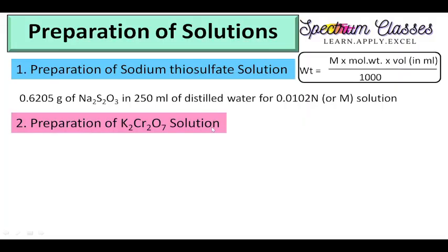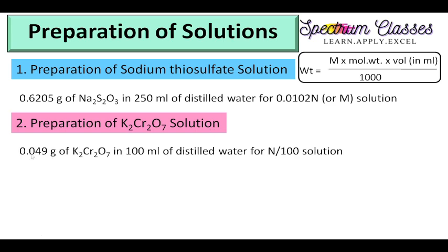Preparation of K2Cr2O7 solution. For this purpose I need to weigh 0.049 grams for 100 ml of distilled water to prepare an N/100 solution. For this calculation we need to divide its molecular weight by 6, because 6 electrons are gained by the Cr in this case. The detailed calculation for this I have given in my previous video — I will put the link here.